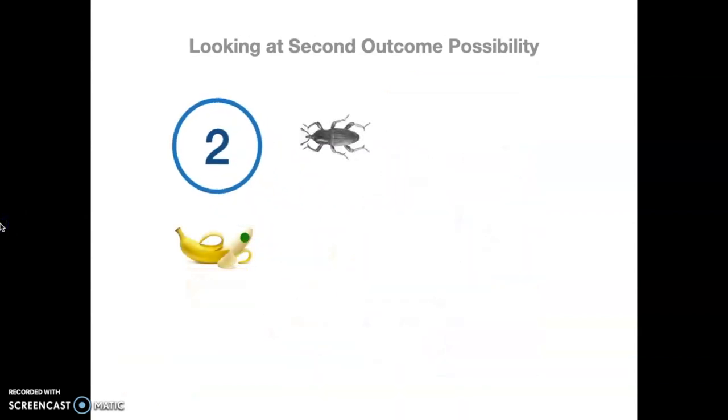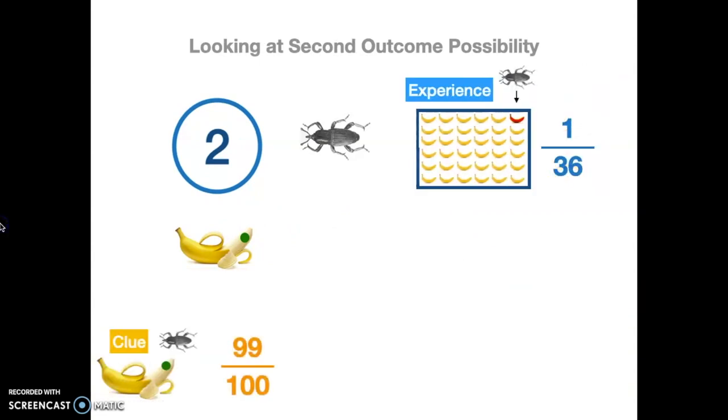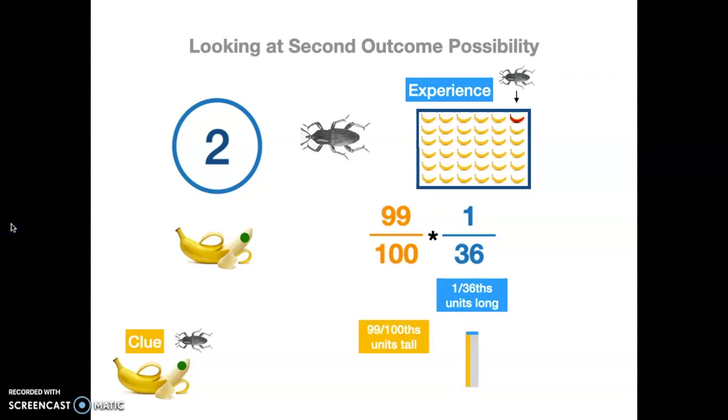Let's look at the next scenario. We've got a green spot. And yes, we have a bug. What happens or where what's the size of this possibility? What's the relative size? Well, you've got one over 36 of experience that you've got a bug in a banana. And then you have 99 out of 100 times that clue is correct that if there's a green spot, then there is a bug. So multiply those together. What do you get? You get a little rectangle that's 99 over 100 units tall by one over 36 units long. So a little bit bigger than our last scenario or last outcome.